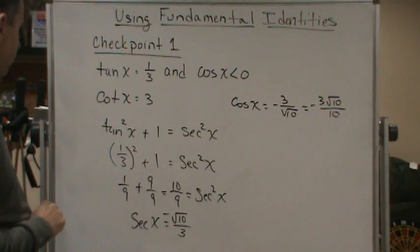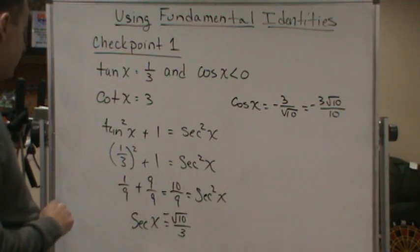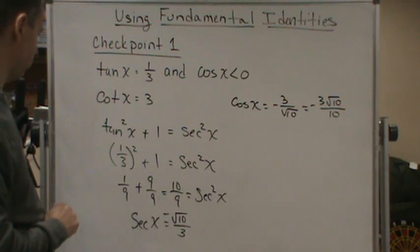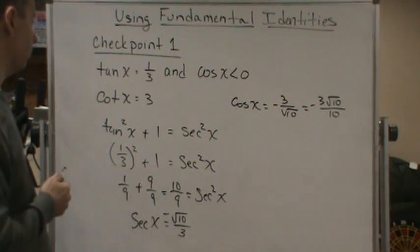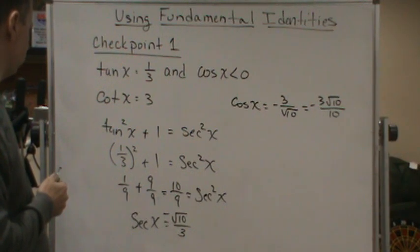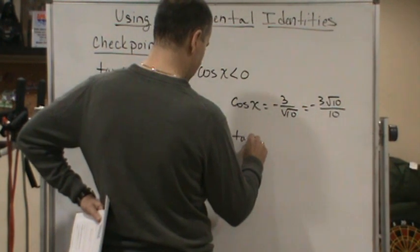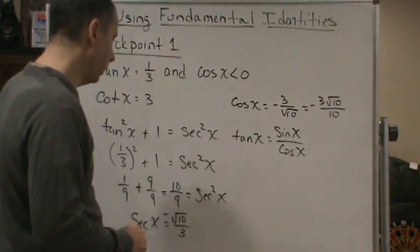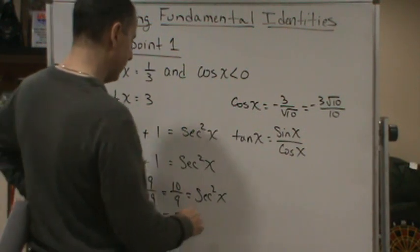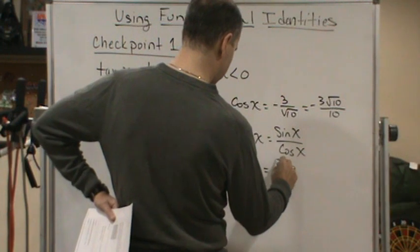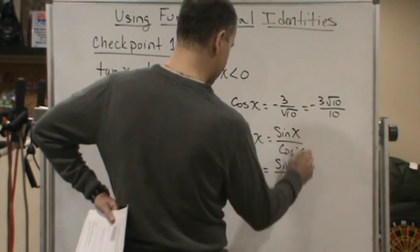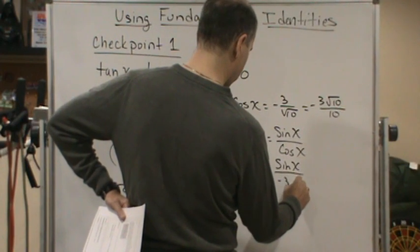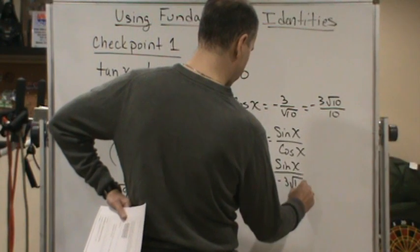So we've got tangent, cotangent, cosine, and secant. We just need sine and cosecant. Since tangent x equals sine x over cosine x, we have one-third equals sine x over cosine x, where cosine x equals negative three root ten over ten.